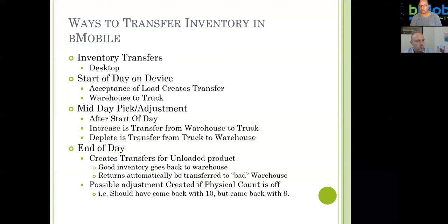Also created in this workflow — not a transfer but an adjustment — is when I should have come back with 10 but came back with 9. Maybe I ate it, lost it, gave it to a customer as a sample but didn't record the transaction. Whatever the reason, we are off on inventory. Assuming you're doing a physical count, we take that discrepancy — 10 versus 9 — and create a physical adjustment for the main warehouse to deplete inventory by one, because we transferred back 10 but are adjusting one to bring that inventory back down.